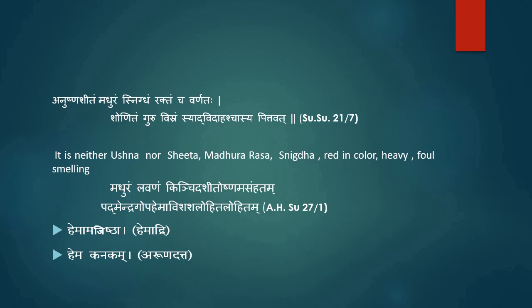Further, Shushrut has mentioned that blood is neither too hot nor too cold, has madurras, is snigdha, red in colour, heavy, foul-smelling, and like the colour of sheep and rabbit. Acharya Hemadri mentioned Hema, and Arundhat mentioned Hema as Kanakam, meaning the colour of blood as red heated gold. This red colour of blood is due to the presence of hemoglobin. When hemoglobin combines with oxygen, brightness of blood increases, and variation of colour in different individuals is due to variation in hemoglobin concentration. The reason behind different shades of blood is that the colour varies in different prakriti individuals, which has been proved by recent researchers.